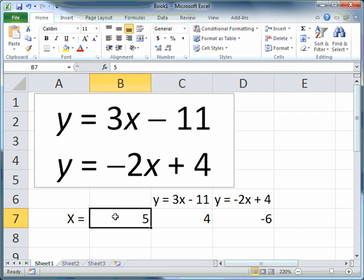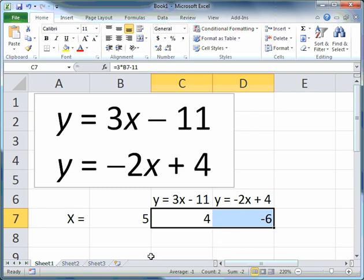So when x equals 5, this is the value of y from the first equation. When x equals 5, this is the value of y produced by the second equation. If this was the correct value for x, and it isn't, but if it was, these two values of y would be the same.